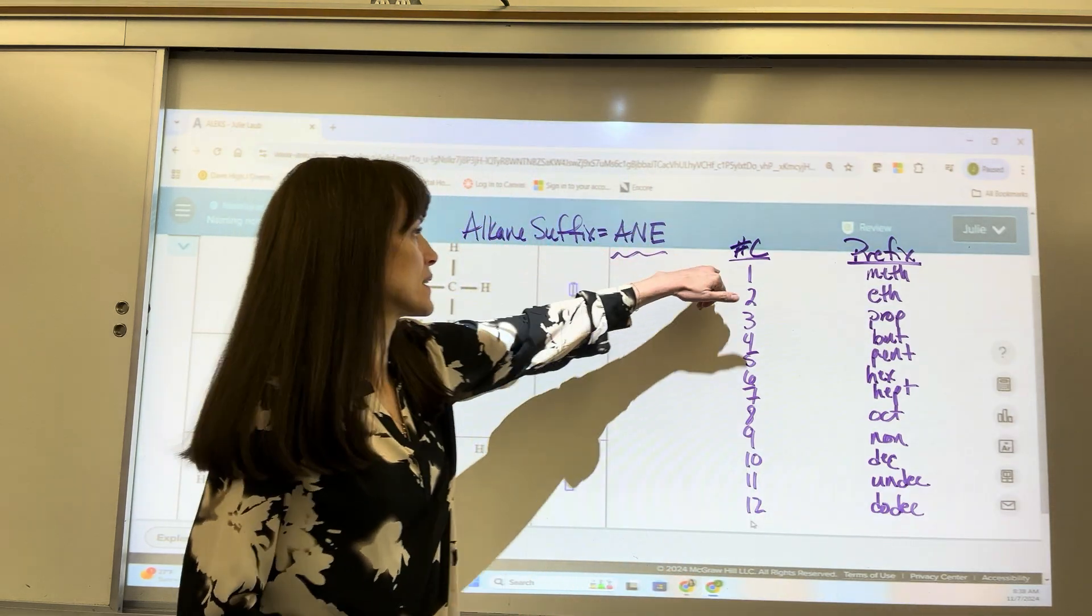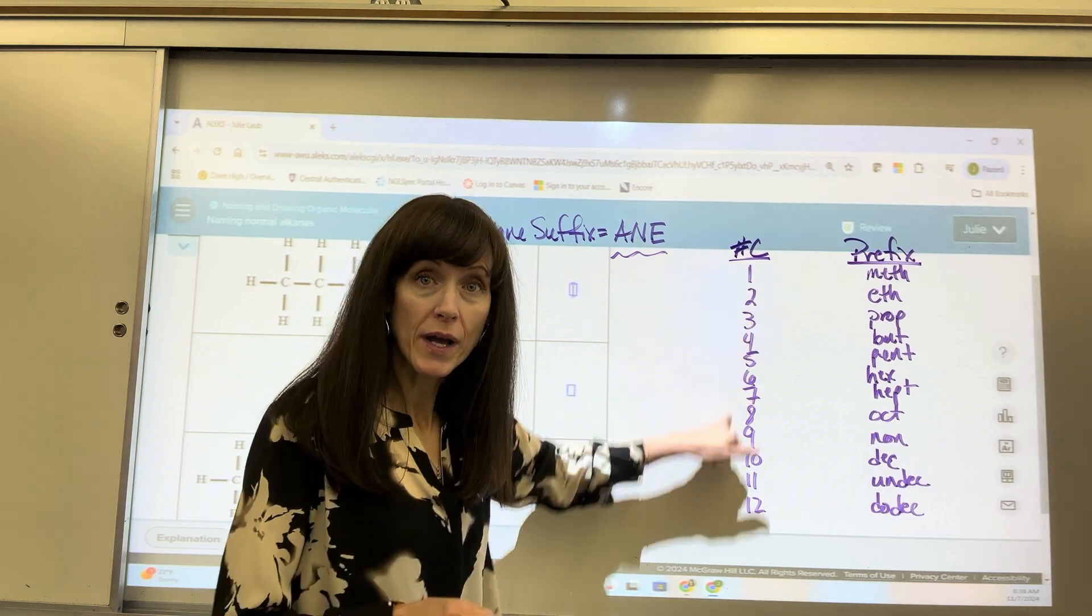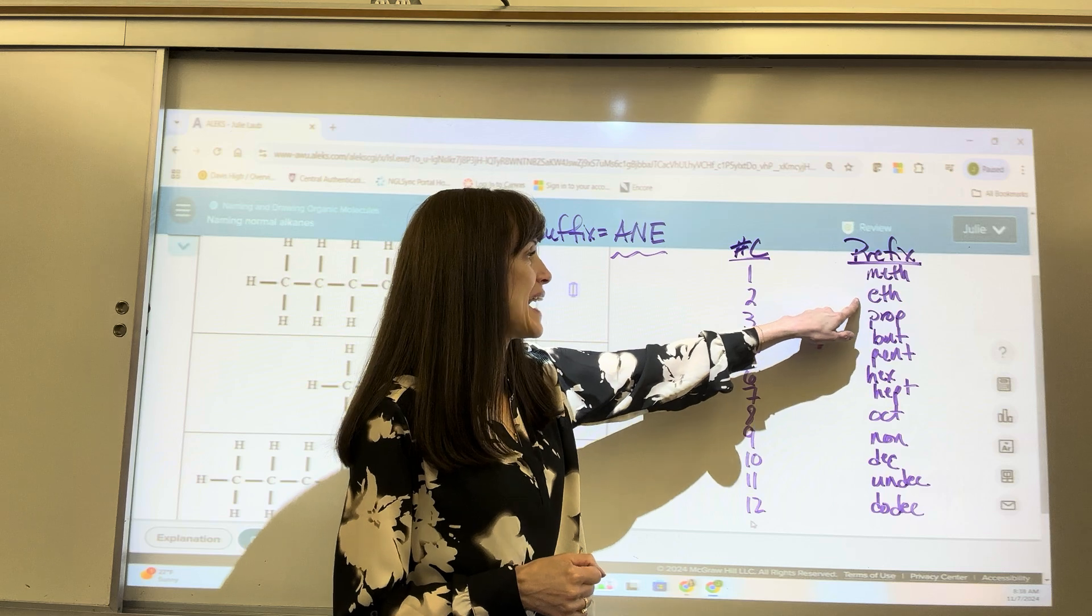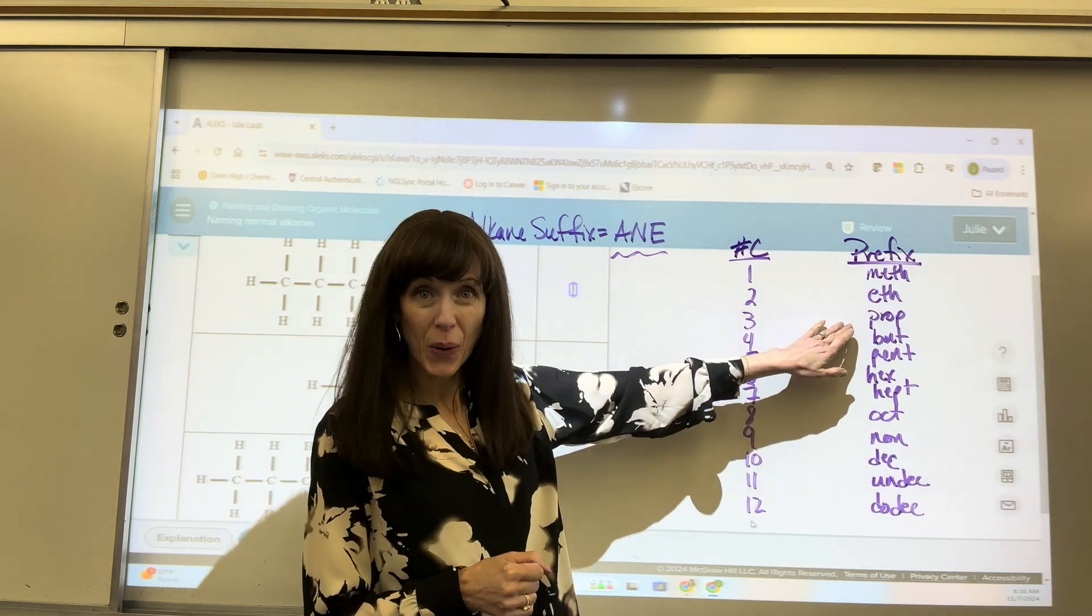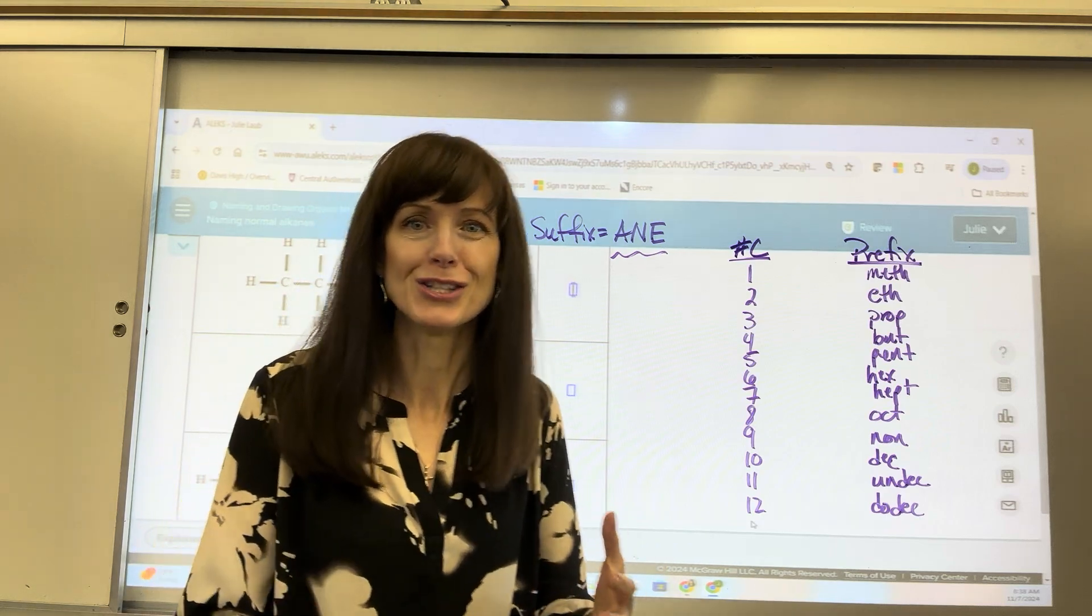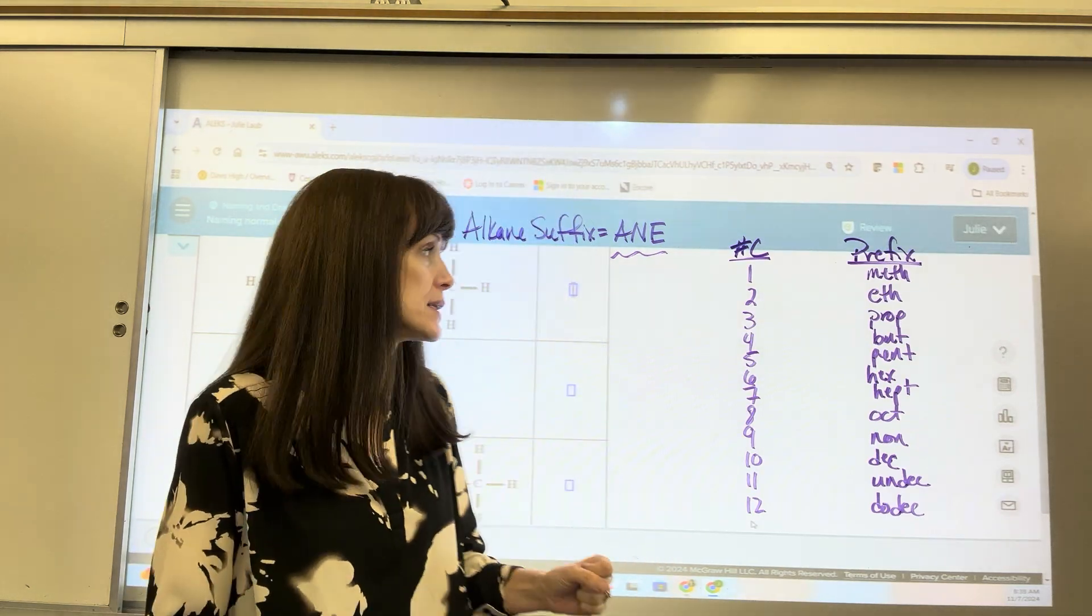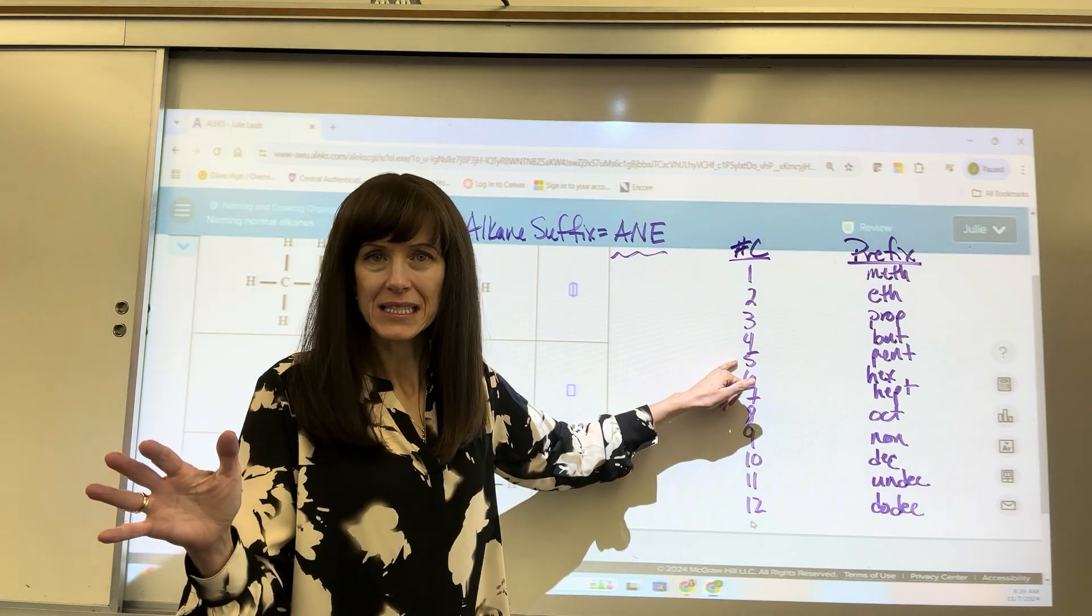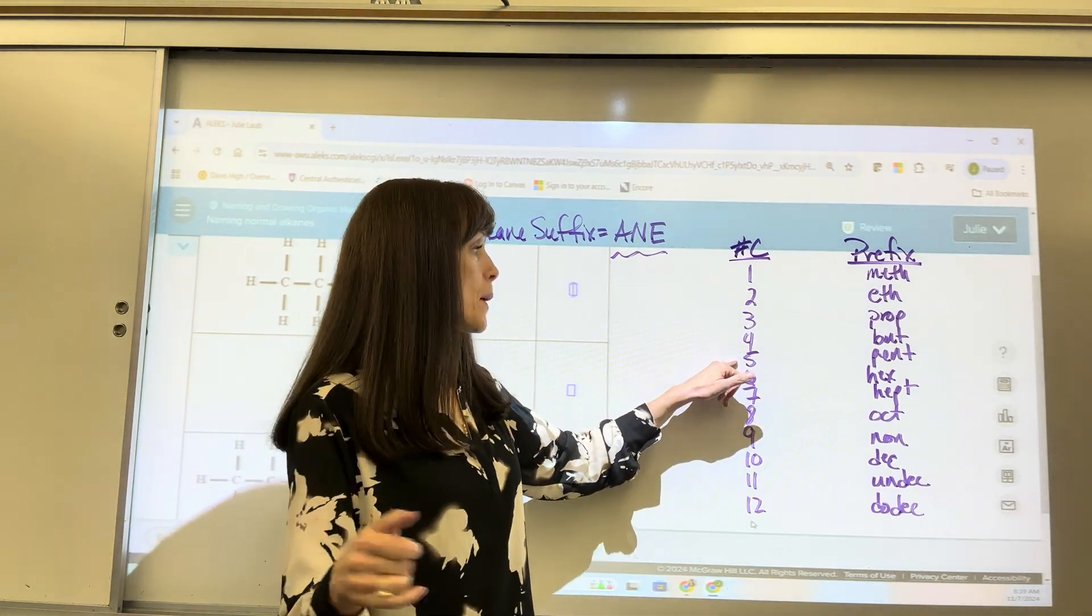let's review the prefixes for our organic molecules. Now, prefix. When you have carbons 1 through 12, just a reminder: 1 is meth, 2 carbons eth, 3 carbons prop, 4 carbons bute. I know it looks like but, the conjunction, but we say it bute. 5, here it gets easy just following the Greek prefixes. Pent,